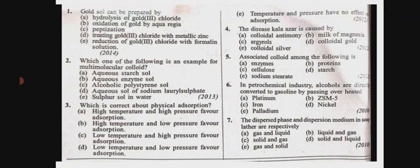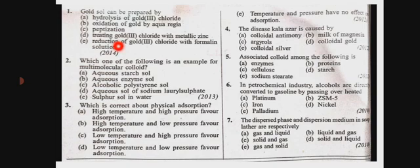Gold Sol preparation. Gold Sol can be prepared by... Gold Sol is the reduction of gold chloride with formalin solution. From our NCERT textbook: 2AuCl₃ + 3HCHO + 3H₂O on reduction gives 2Au, that means Gold Sol, plus 3HCOOH plus 6HCl. Gold Sol can be prepared by reduction of gold chloride with formalin solution.